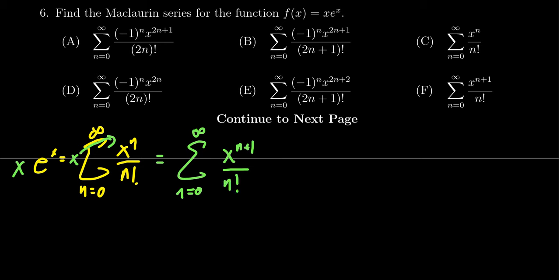We would select choice F, which is the correct one. You can see that option C is just the Maclaurin series for e^x—you're so excited you found the right series for e^x that you forget you didn't multiply by x.